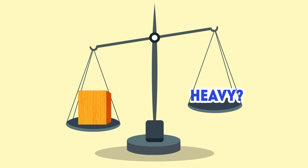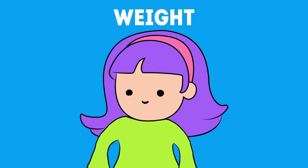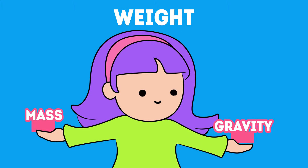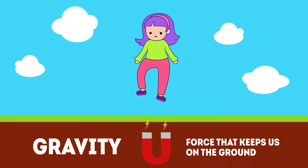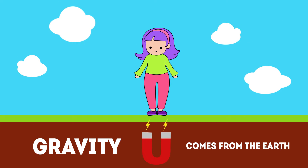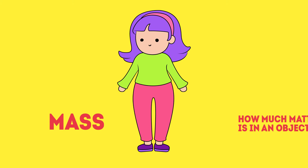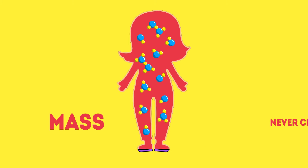But how heavy is this block of wood? When we talk about weight, it has something to do with mass and gravity. We have to learn that gravity is the force that keeps us on the ground, and it comes from the Earth itself. So the reason we don't stay in the air when we jump is because gravity is pulling us down.